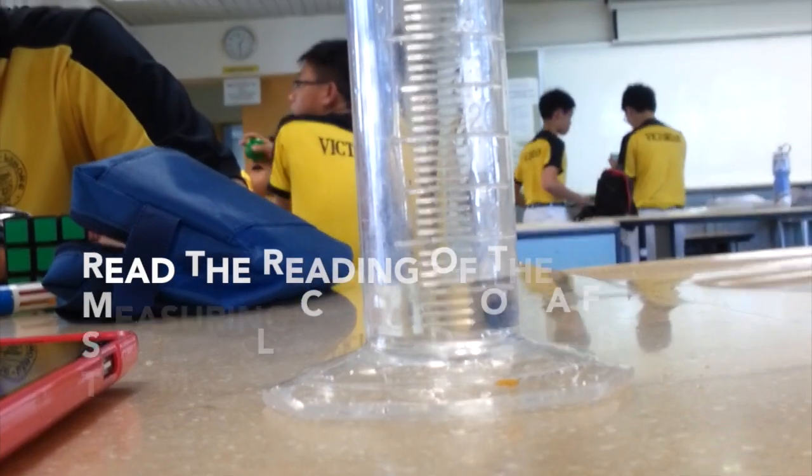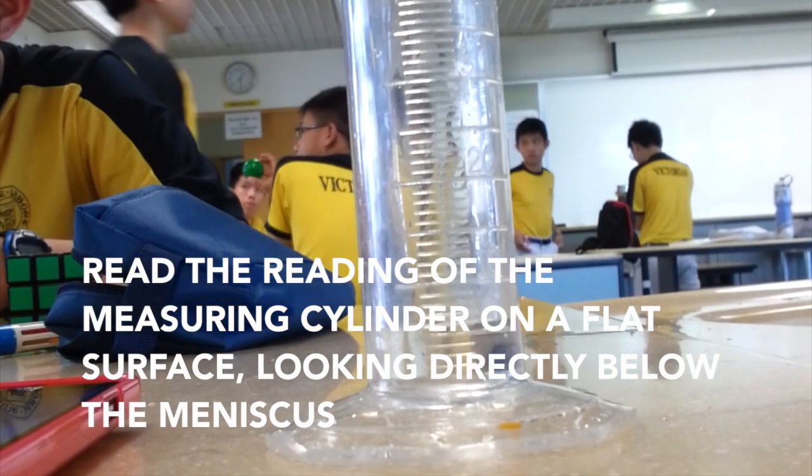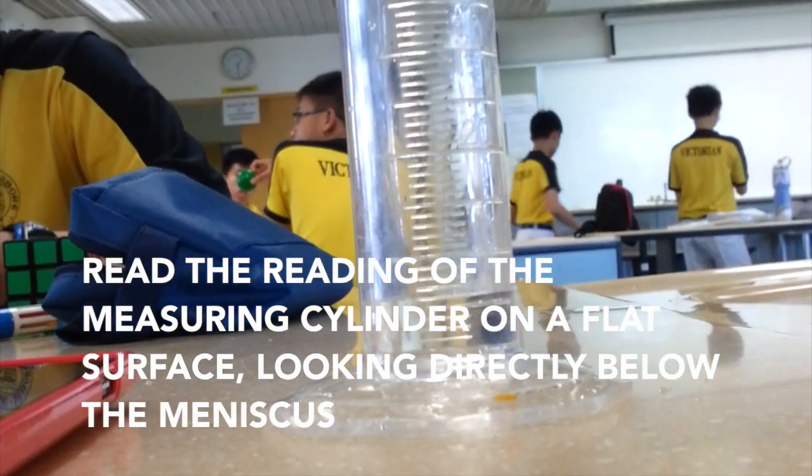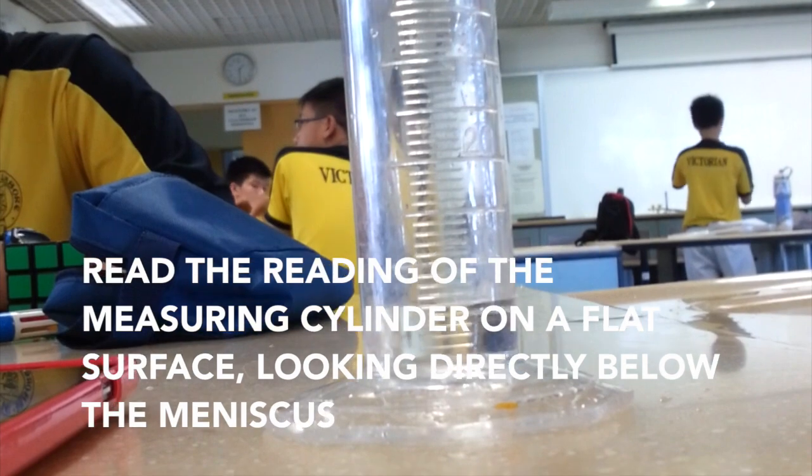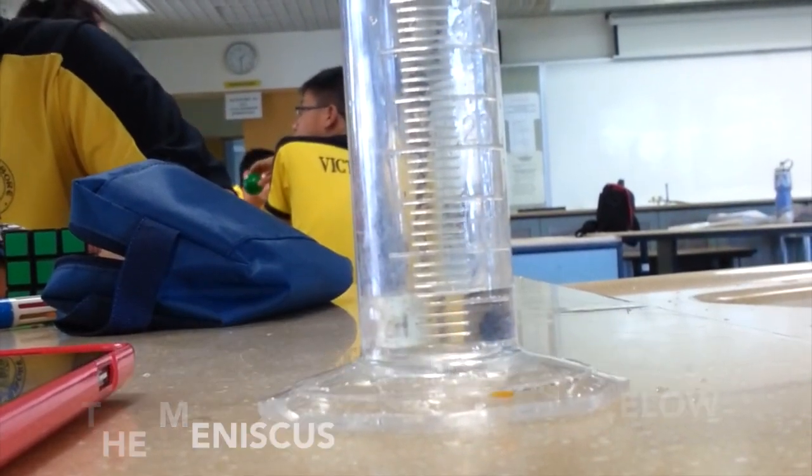Finally, check the volume of water that has been displaced by the eraser by looking directly at the meniscus of the water in the measuring cylinder. The volume of water in the measuring cylinder is the volume of the eraser, in this case 5 cm³.